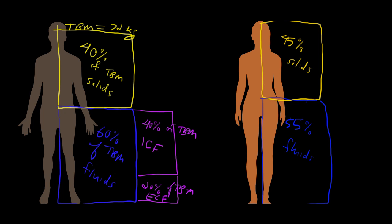And then we have 20% of total body mass is extracellular fluid—it's outside of your cells. So 60% of total body mass is total body water, and that's our 100% of total body fluids. The ICF is really two-thirds of your total body water. And the ECF is one-third of total body water.